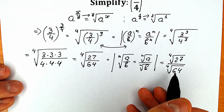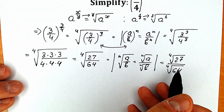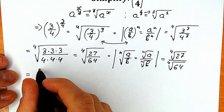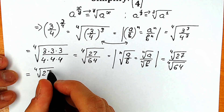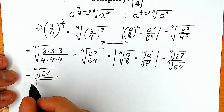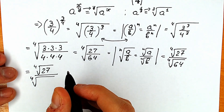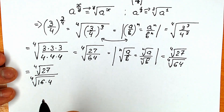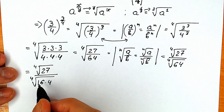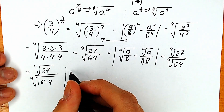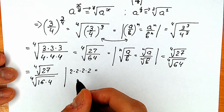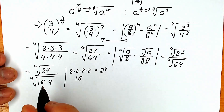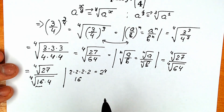We can express 64 as 16 times 4. In our numerator we have the fourth root of 27, and in our denominator instead of 64 let's write 4 times 16. Now 16 is 2 to the fourth power — that is 2 times 2 times 2 times 2. So instead of 16, let's write 2 to the fourth power.